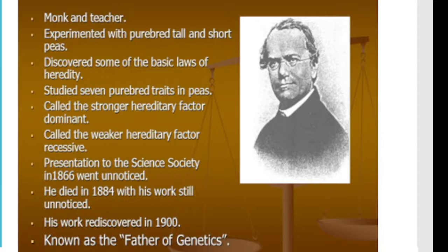Mendel worked on the pea plant because it was beneficial — one generation of the pea plant completes in around 3 months. So in a short time, he could study many generations. If he had chosen a plant that completes one generation in 5 to 10 years, research would have been very difficult. He took 7 traits — characters — of the pea plant. He identified dominant characters and recessive characters. Dominant is stronger and can express itself; recessive is weaker and cannot express itself.